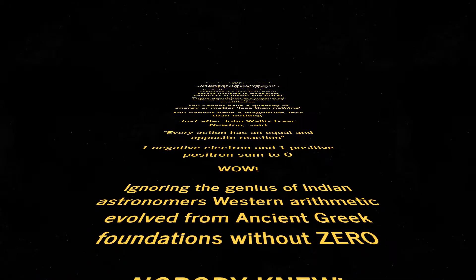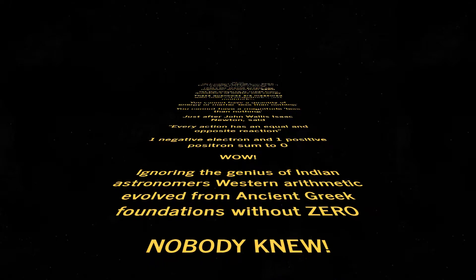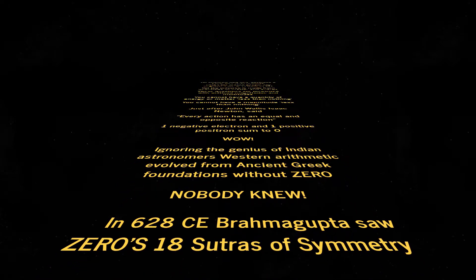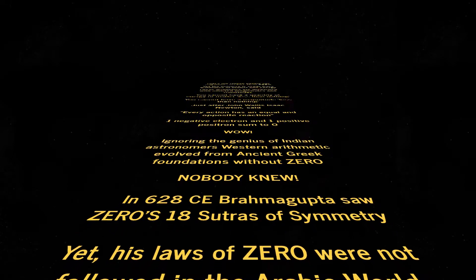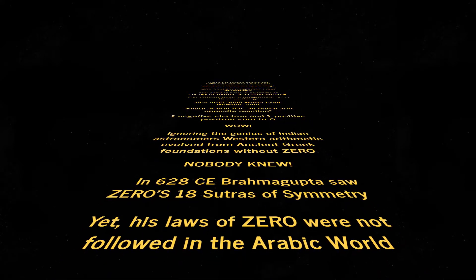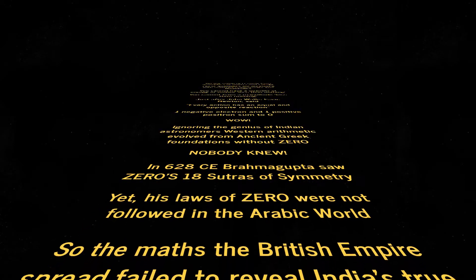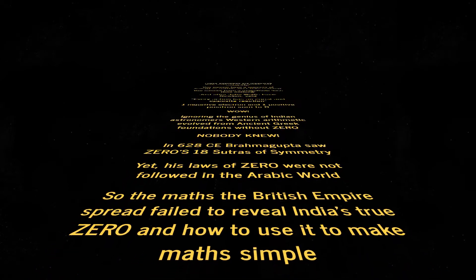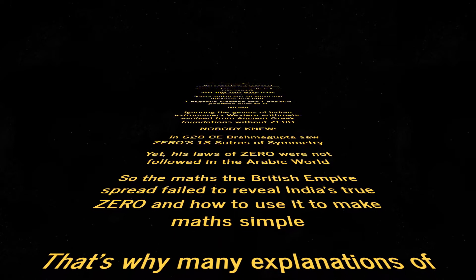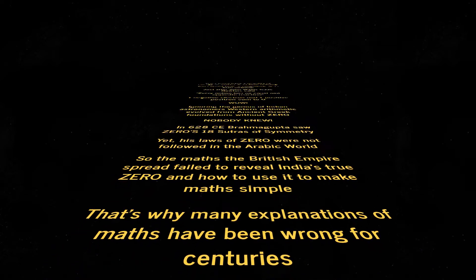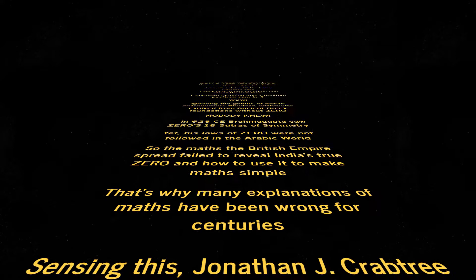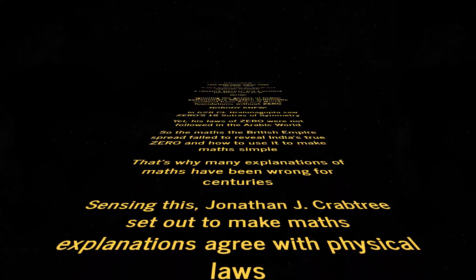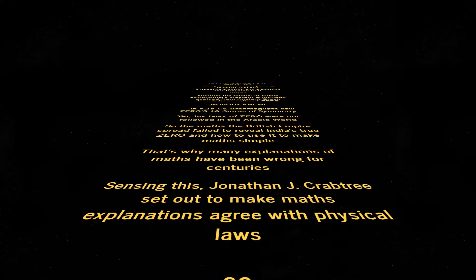Ignoring the genius of Indian astronomers, Western arithmetic evolved from ancient Greek foundations without zero. Nobody knew! In 628 CE, Brahmagupta saw zero's 18 sutras of symmetry, yet his laws of zero were not followed in the Arabic world. So the maths the British Empire spread failed to reveal India's true zero, and how to use it to make maths simple. That's why many explanations of maths have been wrong for centuries.